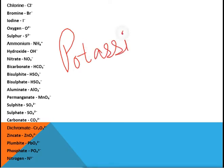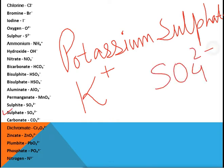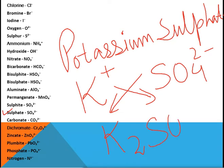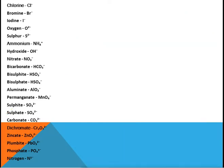Suppose you want to write the formula for potassium sulfate. Potassium is K⁺ and sulfate ion is SO₄²⁻. Since the charges are not equal, we exchange the valencies, and we get K₂SO₄. This is our potassium sulfate.